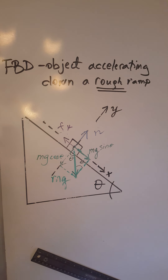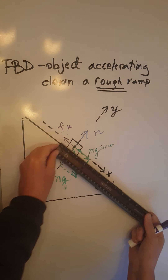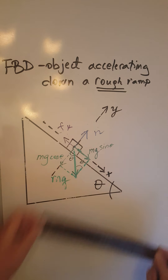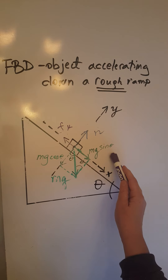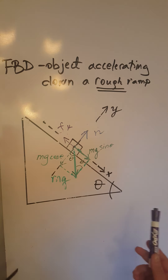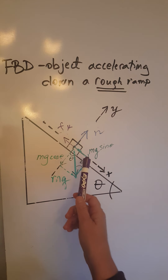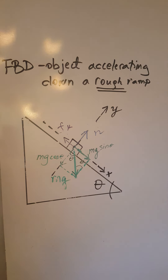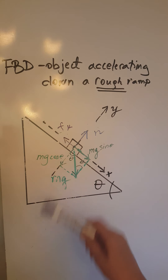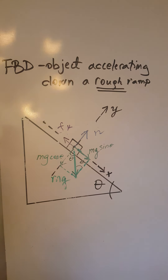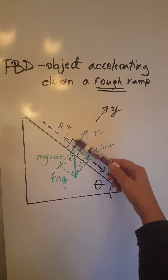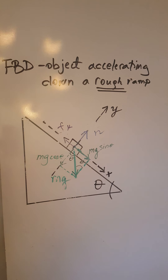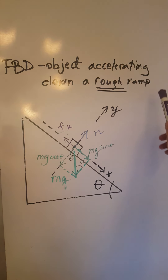fk, once shortened, is just 1.4 centimeters. So mg sine theta is greater than fk, giving us an unbalanced situation along the x-axis with a net force going down the ramp. On the y-axis, the normal force and mg cosine theta are equal in magnitude, making them balanced. The magnitude check has been performed — this is the free body diagram of an object accelerating down a rough ramp.